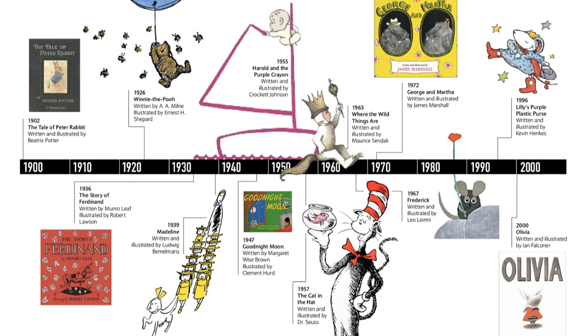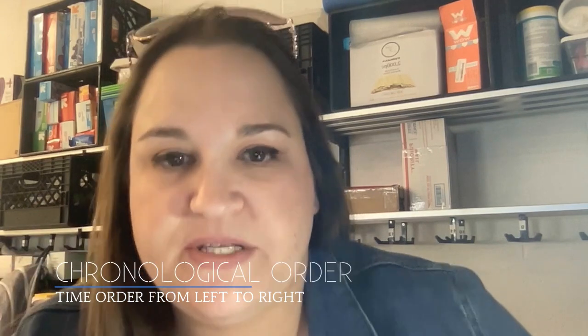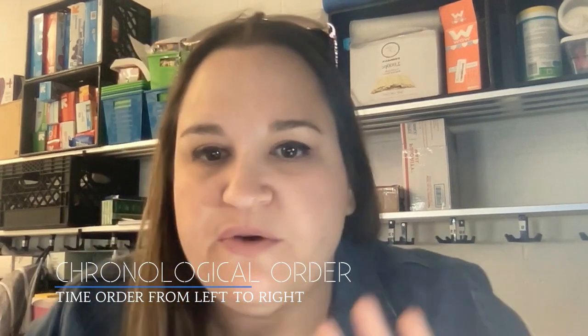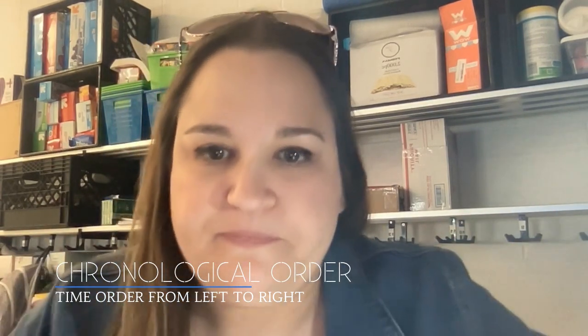So the first thing you need to know is that timelines look kind of like this. I'm going to put a picture up here right now so you can see it. We read them from left to right, so you start all the way at the left. They're organized chronologically, meaning the order in which things happen — the oldest events go all the way to the left, and the newer events go all the way to the right.